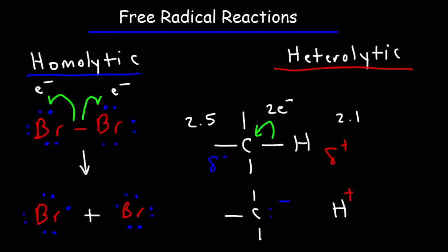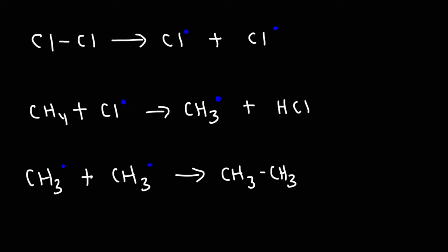Radicals are very reactive. Bromine wants to have eight electrons, so it's going to react with something to strip off an electron so it can have eight. Radicals tend to be very, very reactive species. Now when dealing with free radical reactions, you need to be able to identify three important steps: initiation, propagation, and termination.